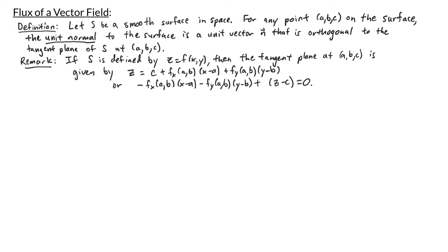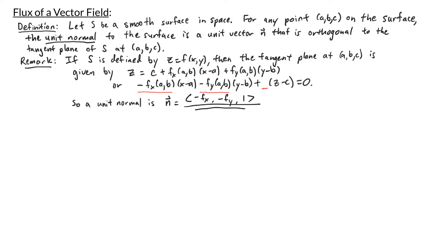The reason to write the equation of the plane like this is because we can easily read off what the normal vector is. The coefficients — negative fx at AB, negative fy at AB, and 1 — are components of a vector that is orthogonal to the tangent plane. So to find the unit normal, all we have to do is divide by the magnitude of that vector. A unit normal vector to the surface is given by n equals negative fx, negative fy, 1, divided by the square root of fx squared plus fy squared plus 1.